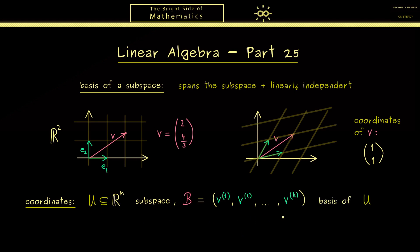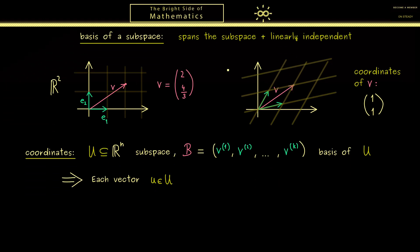And now what we do is that we take any vector lowercase u in our subspace U. And we know by assumption that this u can be spanned by the basis vectors v₁, v₂ and so on.